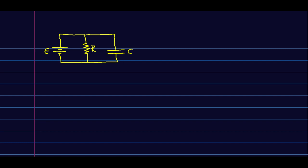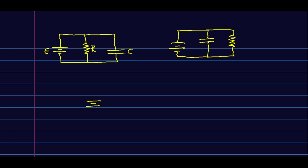Something to realize is that the only thing that matters is what's connected to what, and there are many ways of drawing it that leave it unchanged. For example, if I just swap the capacitor and the resistor, I've made no change to the circuit — leaving the battery, I arrive at a junction and have a choice between a branch through the resistor or through the capacitor. Similarly, if I just change the angles of things, I haven't changed the circuit at all.